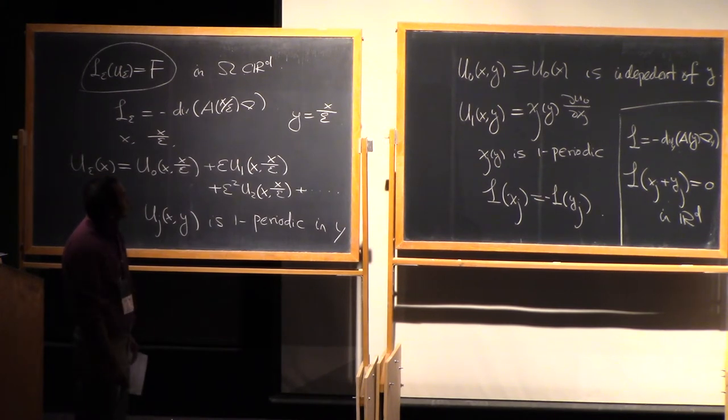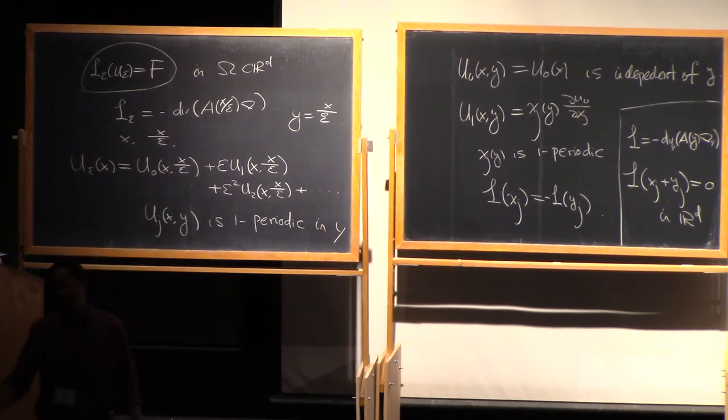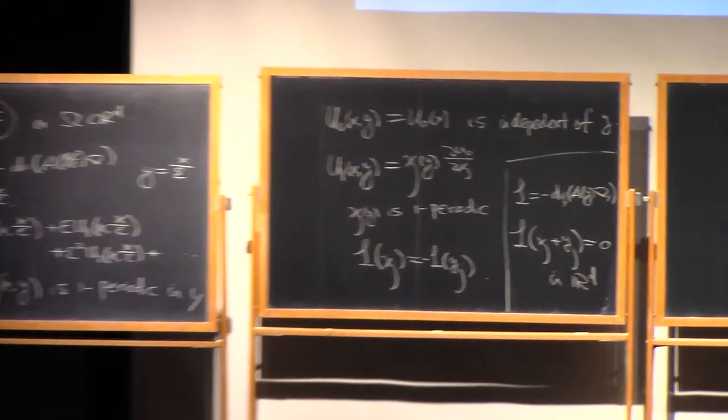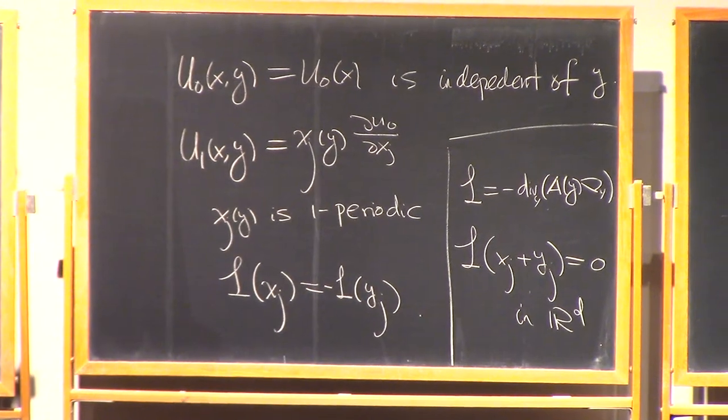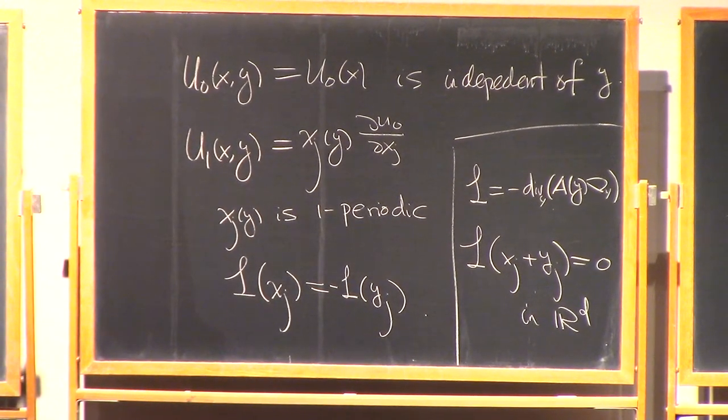When you add χ_j to the linear function, it becomes a solution everywhere in the space. This χ_j is also one periodic, and I also ask that the mean in each periodic cell is zero. In the periodic setting, the existence of the corrector is a simple matter, but it's actually one of the most difficult parts if you're going beyond periodic setting.